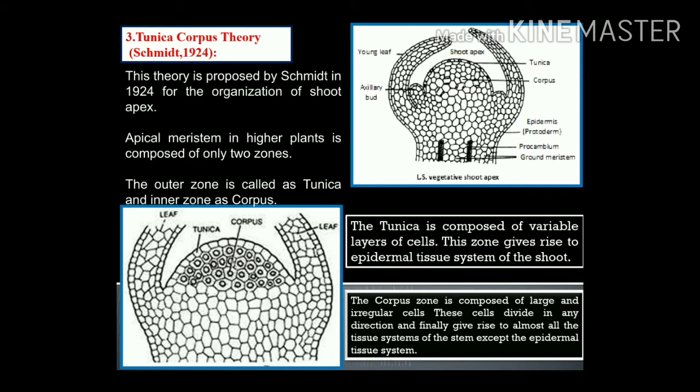When division occurs in a single anticlinal plane, it does not increase the number of layers. Generally, tunica is single-layered, but sometimes it is multi-layered. The outermost layer forms the epidermis and remaining layers form the rest of the tissue system in association with the corpus. Corpus is the mass of cells present below the tunica, and these cells divide in all directions, increasing volume, forming the rest of the tissue system.